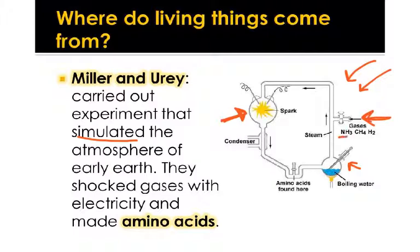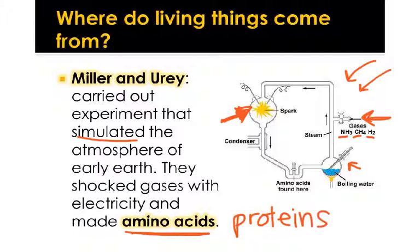In the Miller-Urey experiment, the gases used were things like ammonia, methane, and hydrogen — they did not use oxygen because they didn't think oxygen was in the atmosphere of early Earth. The shock of electricity represented lightning. It turns out they were able to make amino acids. Amino acids aren't alive, but they are the building blocks of proteins, and if we can make amino acids, that's one step closer to making proteins and therefore living things.